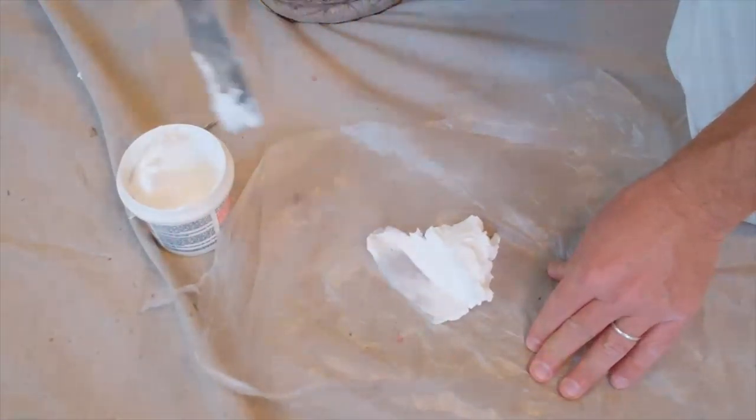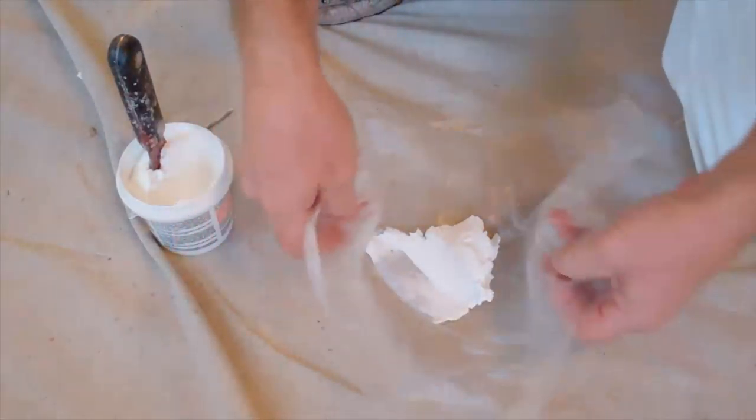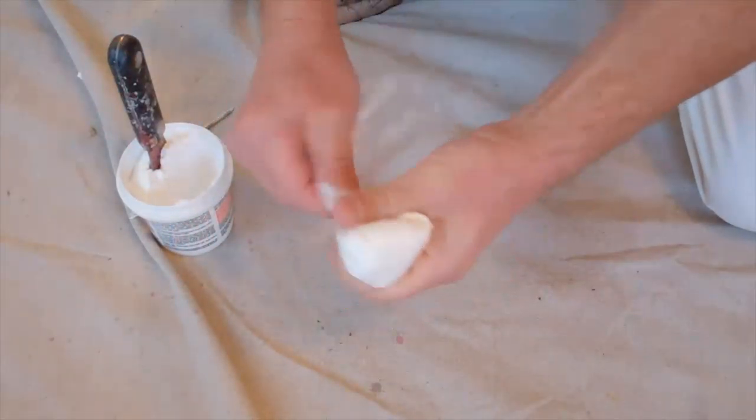Take a big scoop of spackle and stick it right in the middle of a piece of your painter's plastic, then turn it into a ghost.